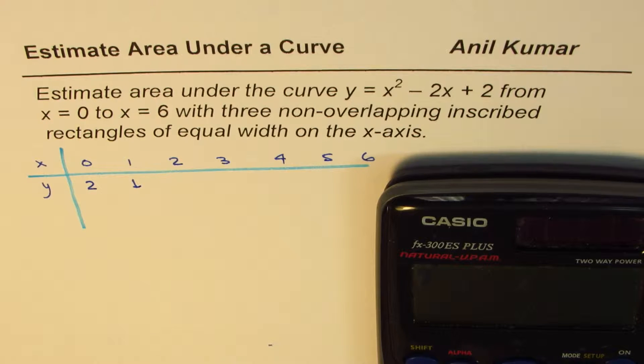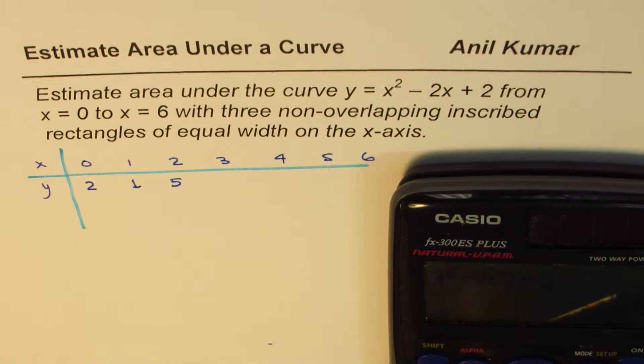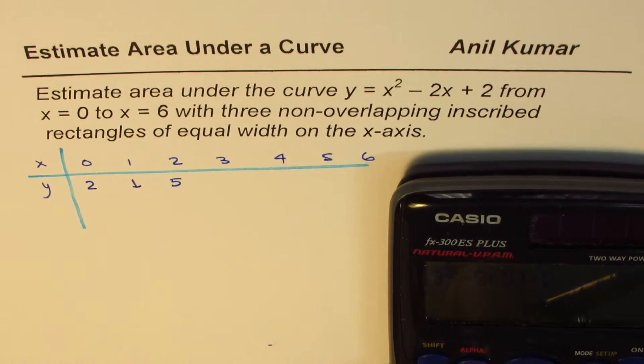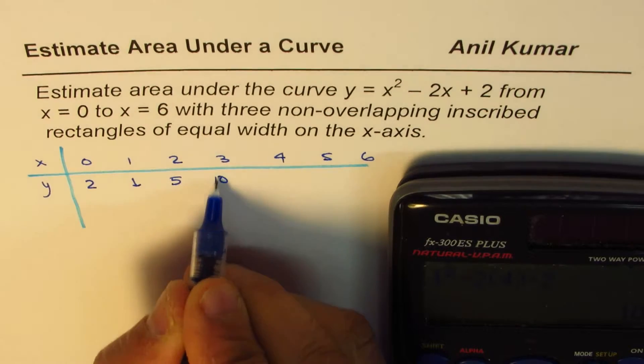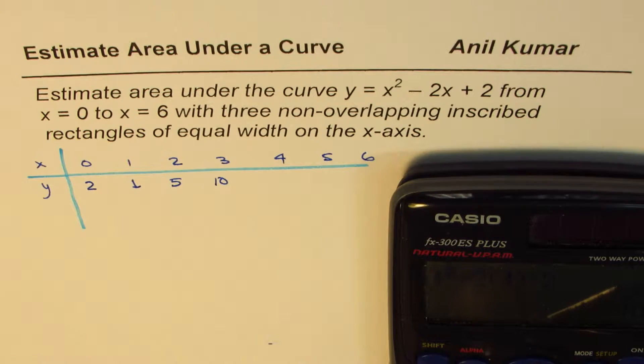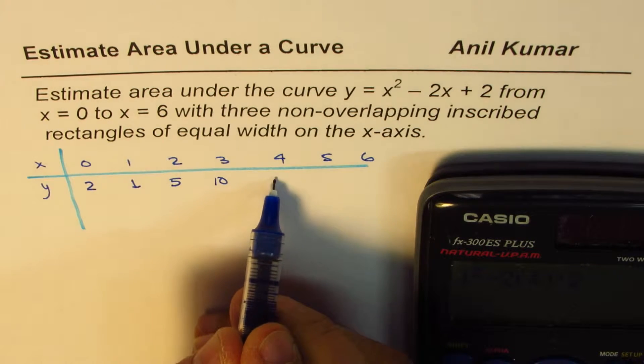If I substitute 3, I get 3 squared minus 2 times 3 plus 2, and that gives me 5. And if I substitute 4, so I replace 3 with 4 in my equation, and the value becomes 10.